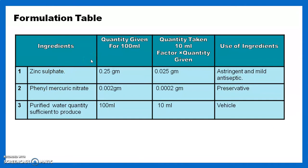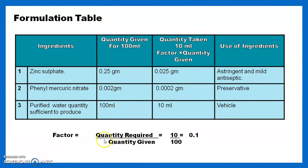The formulation table contains ingredients, quantity given, quantity taken, and use of ingredients as per IP. Ingredients are zinc sulfate, phenyl mercuric nitrate, and purified water quantity sufficient to produce 100 ml. The formula is given for 100 ml, but today we prepare only 10 ml. The factor is 0.1. Zinc sulfate is used as an astringent and mild antiseptic, phenyl mercuric nitrate as a preservative, and purified water as a vehicle.